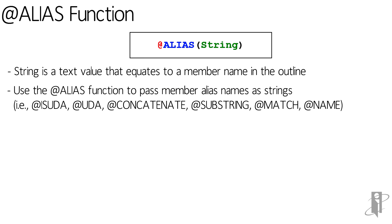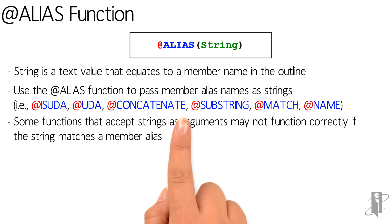We use the alias function to pass member alias names as strings. For example, when passing alias names as strings to functions such as isUDA, UDA, concatenate, substring, match, or name. Some of these functions that accept strings as arguments may not function correctly if the string matches a member alias.